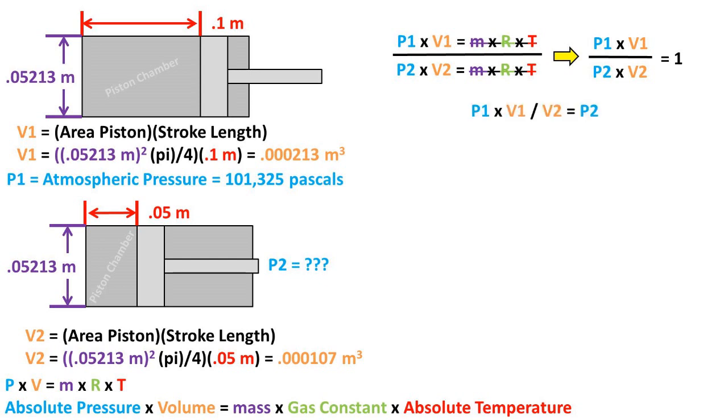To get what we are solving for, which is P2 to one side, we can multiply both sides by P2. We are left with P1 times V1 over V2 being equal to P2. Plugging in all of our numbers, we get a pressure at the final condition, or state 2, of 202,650 pascals.